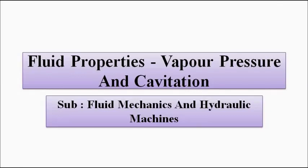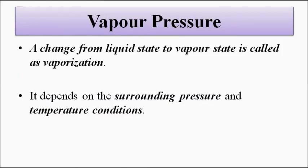We know that when a liquid changes from the liquid state to vapor state, that process is called vaporization. It can also return back from vapor to liquid state. This change of state from liquid to vapor and the interchange depends on the surrounding pressure and temperature conditions — this is very important.